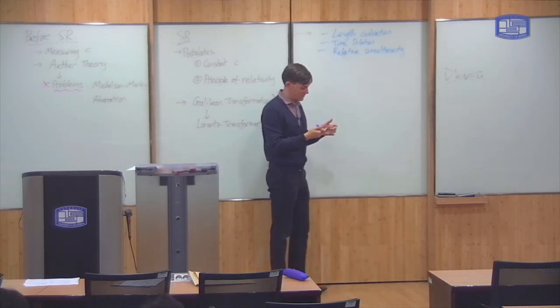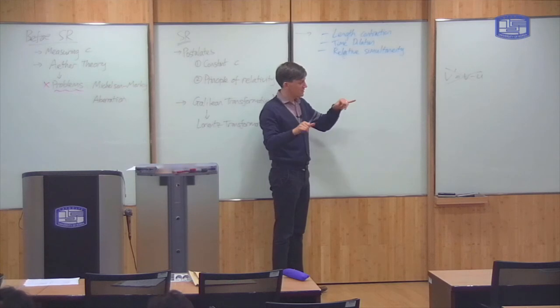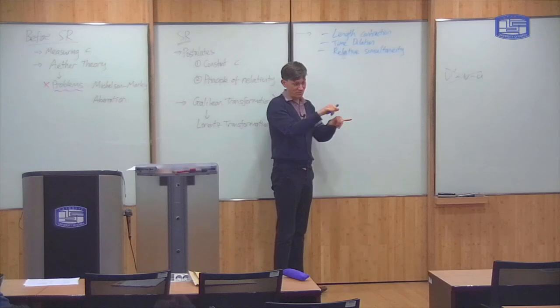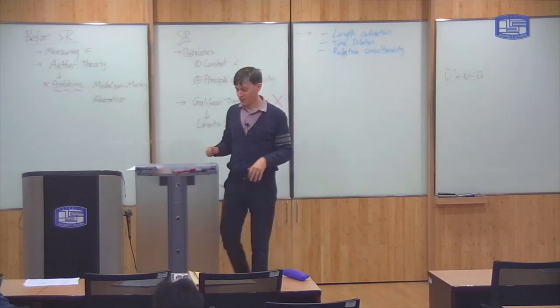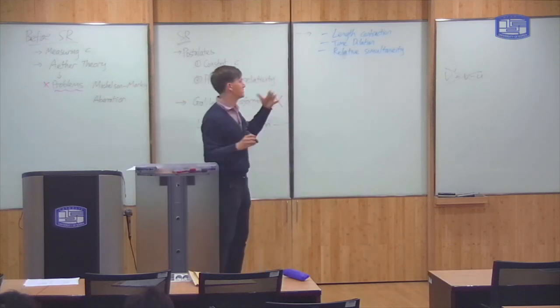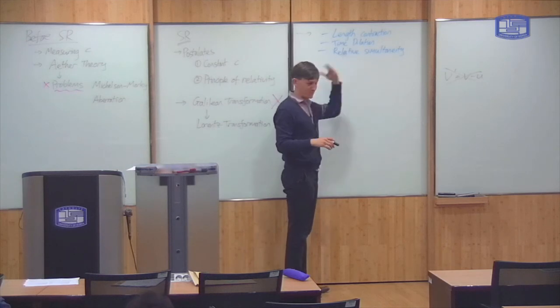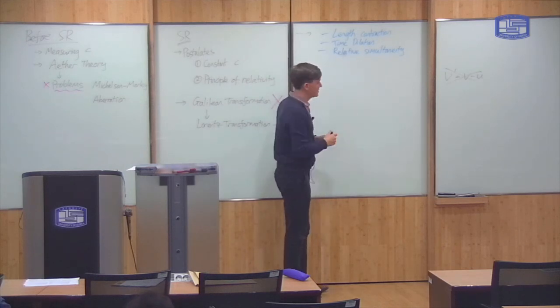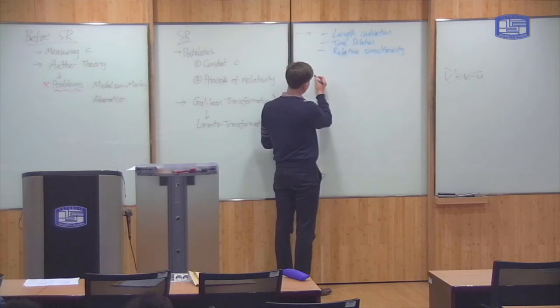These are all effects which describe the difference in space and time measurements between different observers with different velocities. And we did some, you know, talked about some experiments that can give evidence of this, talked about some of the effects of these, some of the consequences of these effects.